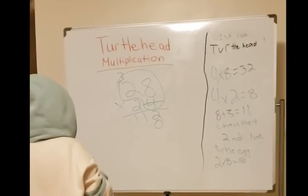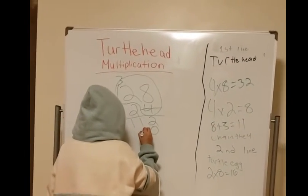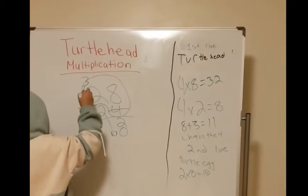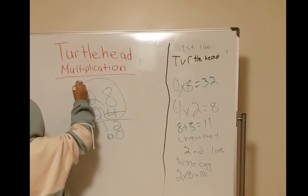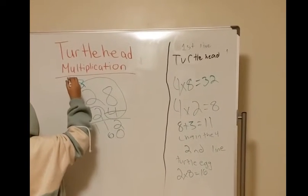So I would put the 6 underneath the 1. Then I would cross out my 3 and replace it with the 1.